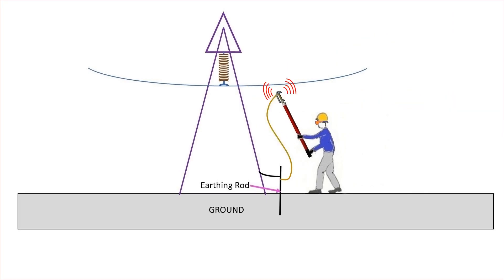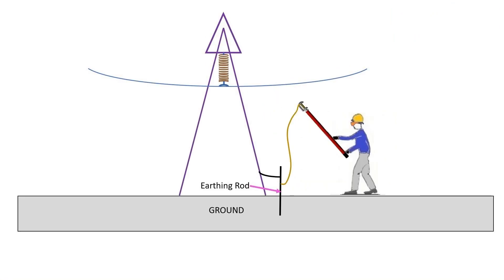In case the worker gets nervous and removes the grounding cable away from the transmission line, a heavy electrical arc will be established due to the interruption of current and will result in electric shock to the worker.